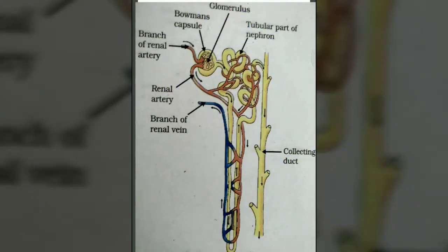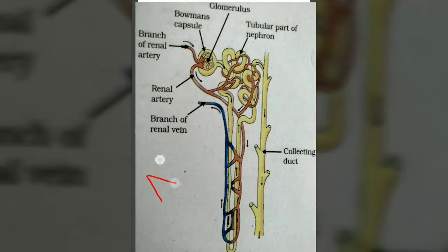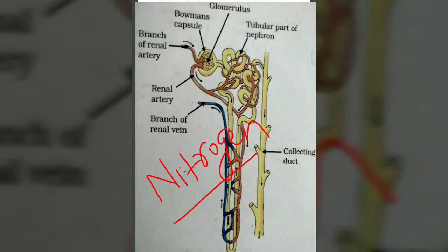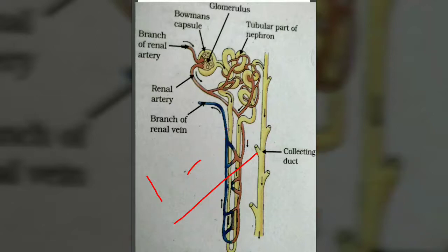This is how the structure of a nephron looks. Before explaining the structural details of the nephron, I will tell you the requirements of our body. In our body, there are many different types of waste, especially nitrogenous waste. This nitrogenous waste includes urea and amino acids. The main function of our kidney is to remove this nitrogenous waste from the body.